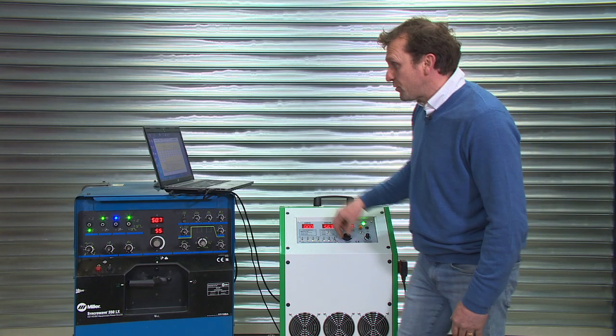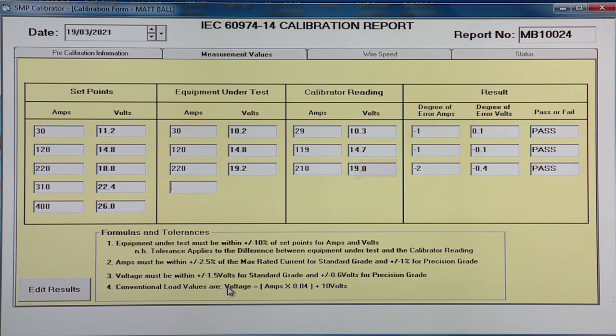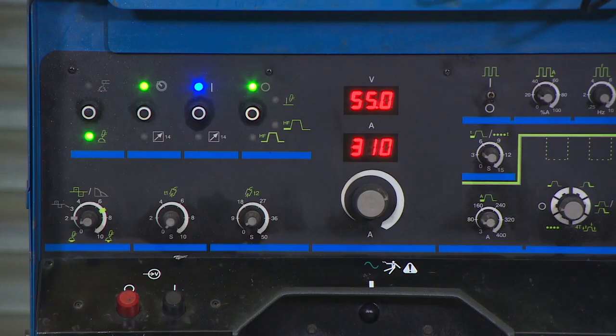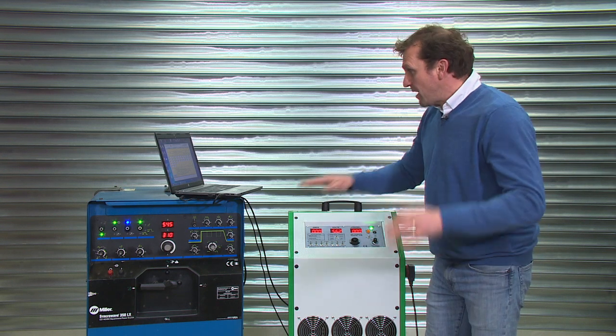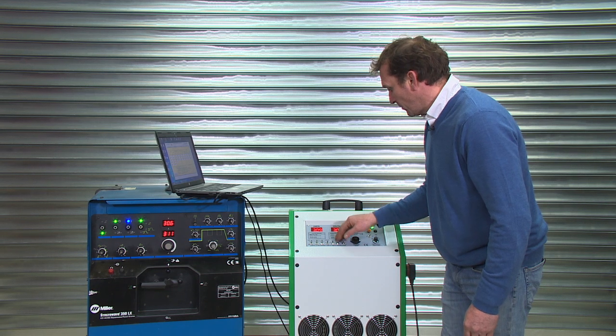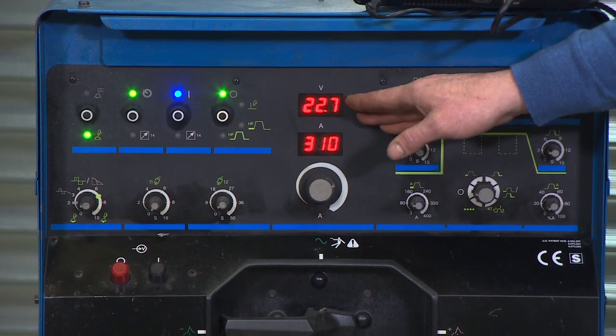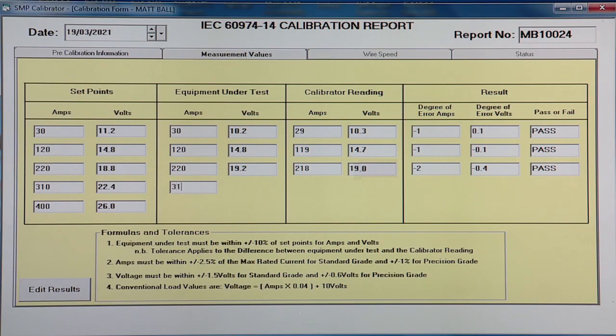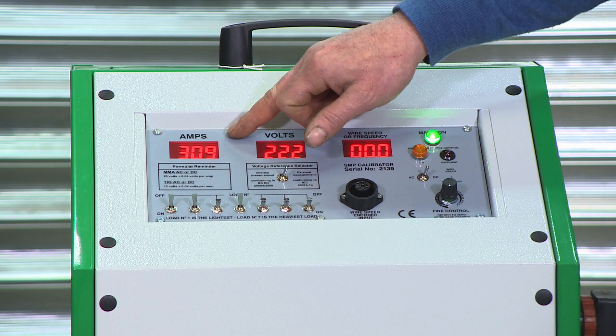Then we'll move on and take our next reading, 310 amps and 22.4 volts. Set the welder to 310. Then we'll load the calibrator to read around the 22.4 volts. So we have the welder reading 310 amps, 22.7. We enter that into the program. And then we fill in the calibrator reading, 309 and 22.2.